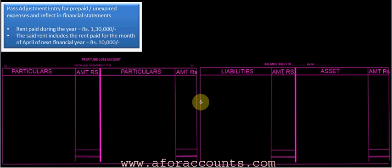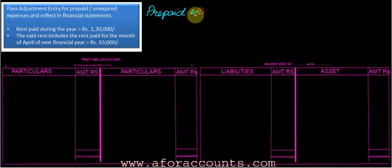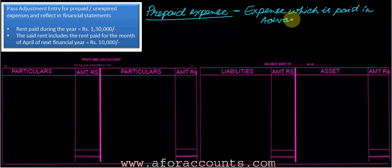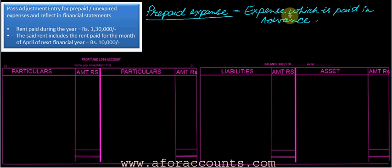Now the second most important adjustment entry — let's start the adjustment entry for prepaid or unexpired expenses and reflect them in the financial statement. What is a prepaid expense? Simply put, it is an expense which is paid in advance.